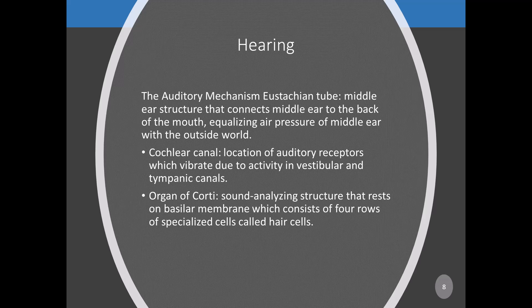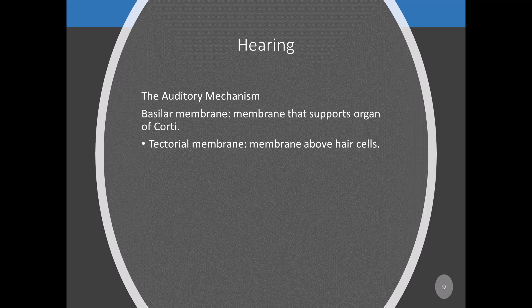The cochlear canal is the location of auditory receptors, which vibrate due to activity in the vestibular and tympanic canals. The organ of Corti is a sound-analyzing structure resting on the basilar membrane, consisting of four rows of specialized cells called hair cells, their supporting cells, and a tectorial membrane above. Hair cells are the mechanical receptors for auditory stimulation. Vibrations of the basilar membrane bend the hair cells — forward movement opens potassium and calcium channels, and the inflow of ions depolarizes the hair cell membranes.